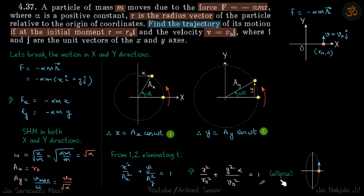This is an equation of ellipse, so the trajectory will be ellipse. Now I've drawn it a little bit flat assuming r naught is less than v naught by root alpha. If v naught by root alpha is greater than r naught, then the ellipse will be flat like this. And of course, if r naught equals v naught by root alpha, then it will be a circle.